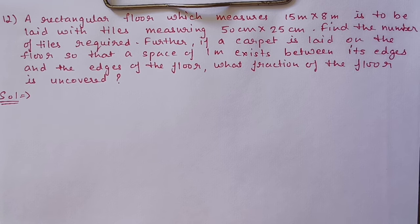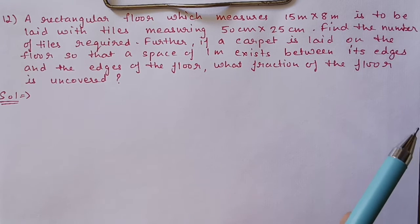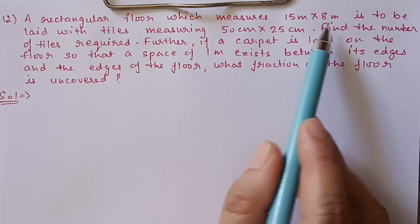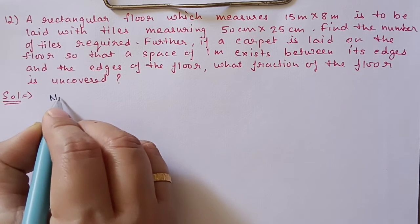Further, if a carpet is laid on the floor so that a space of 1 meter exists between its edges and the edges of the floor, what fraction of the floor is uncovered? First of all we will find out the number of tiles. The total floor area is given and one tile area is given, so number of tiles equals floor area divided by one tile area.